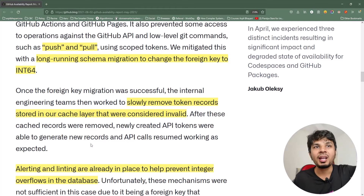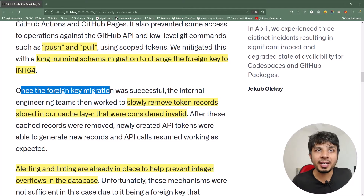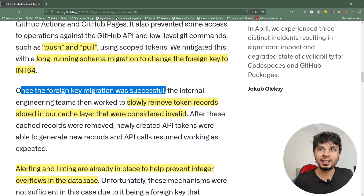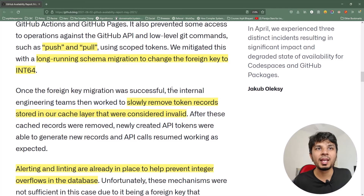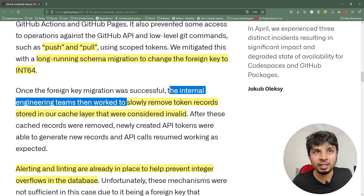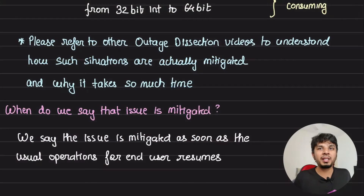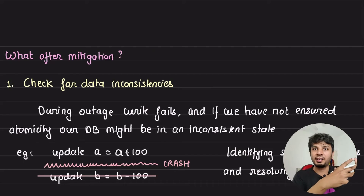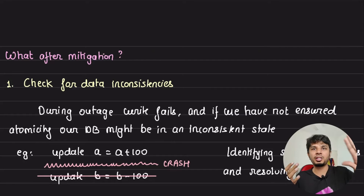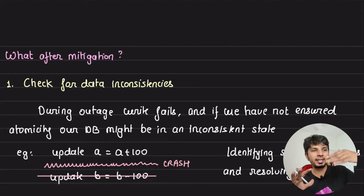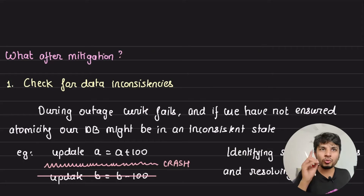But coming to the main agenda for this video: assume the mitigation is done and everything is up and running — but is that it? Do we have to do anything else? As specified in the report, once the foreign key migration was successful the writes started getting accepted and things became normal. The internal engineering teams then worked to slowly remove token records stored in the cache layer that were considered invalid. This brings us to a very important point: issue mitigation versus resolution. Mitigation means your service is back up — but it is not yet resolved. Mitigation and resolution are two very different things.